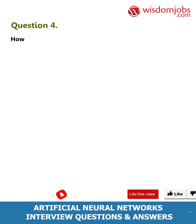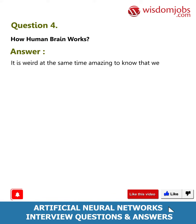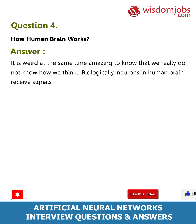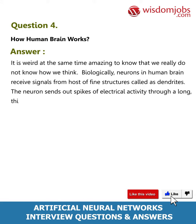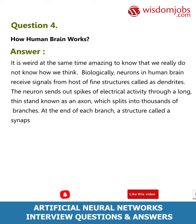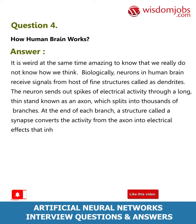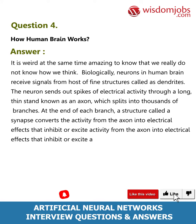Question 4: How does the human brain work? It is weird yet amazing that we really do not know how we think. Biologically, neurons in the human brain receive signals from fine structures called dendrites. The neuron sends out spikes of electrical activity through a long thin strand known as an axon, which splits into thousands of branches. At the end of each branch, a structure called a synapse converts the activity from the axon into electrical effects that inhibit or excite activity in connected neurons.